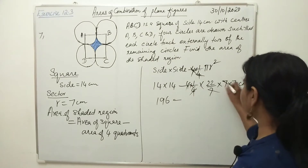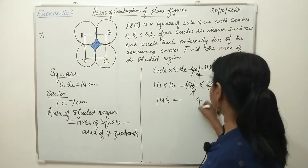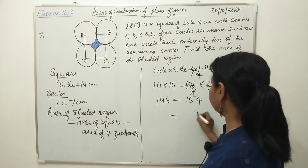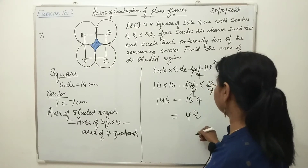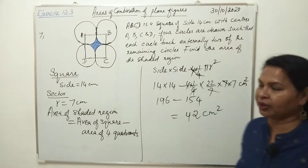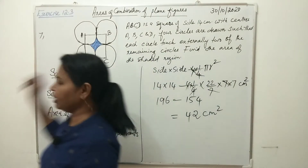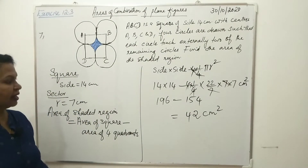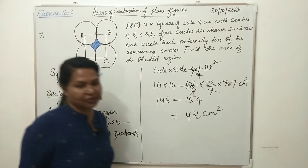Then 7 and 7 cancel. 22 × 7 = 154. We get 196 minus 154 = 42. That is centimeter square. Very simple question. The area of the shaded region is equal to 42 centimeters square.